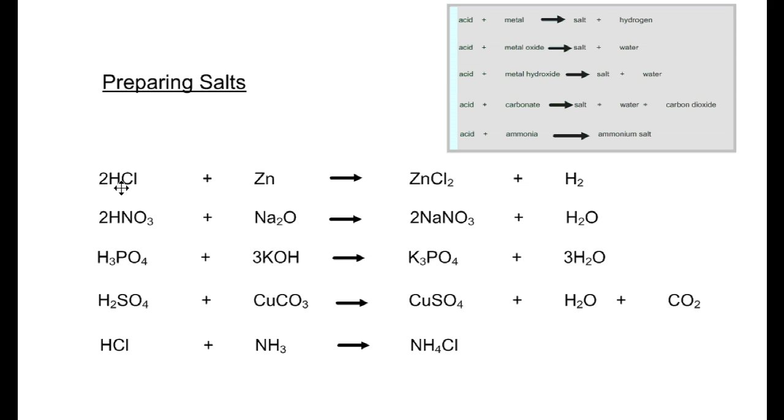If you look at the first acid, it's HCl, which is hydrochloric acid. When hydrochloric acid reacts with zinc as an example of a metal, we get zinc chloride as your salt and hydrogen gas is produced.